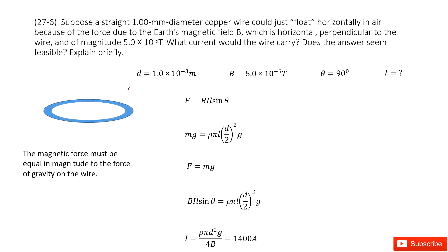And because of the force due to the Earth's magnetic field B. So from this sentence, we can see the wire can float horizontally. So that means the gravity is balanced with the magnetic force.